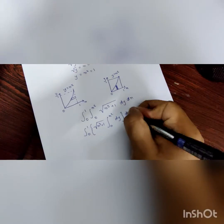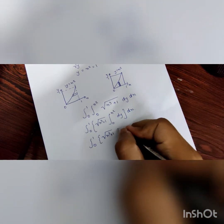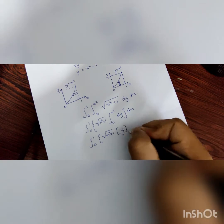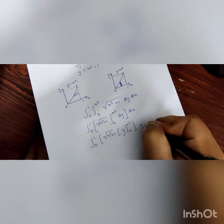As there is no y over here, when we integrate this, it comes out to be y, from 0 to x squared, dx.